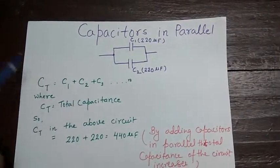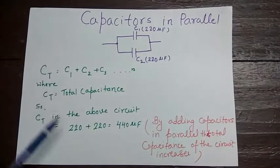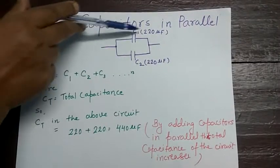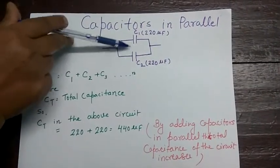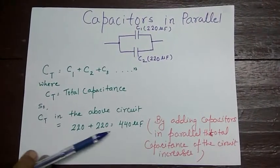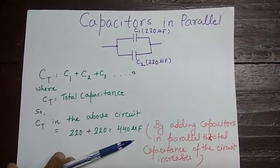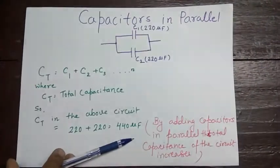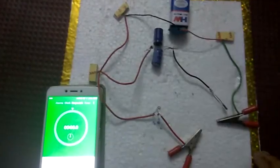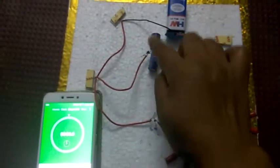When we connect capacitors in parallel, we can calculate their total capacitance this way. The capacitance value of these two capacitors are 220 microfarad each, so the answer will be 220 plus 220, which equals 440 microfarad. We can observe that by adding capacitors in parallel, the total capacitance of the circuit increases.